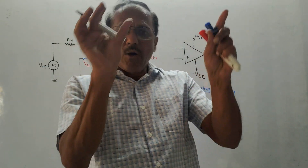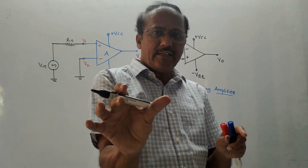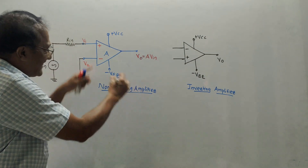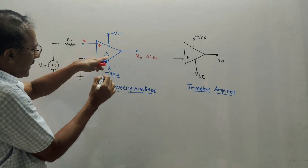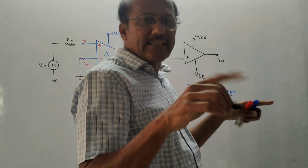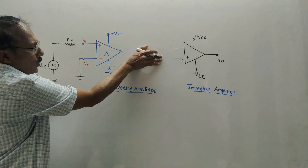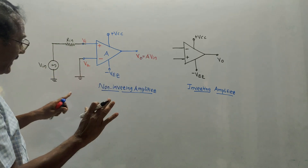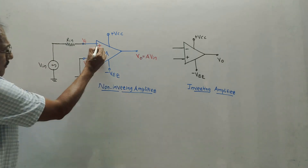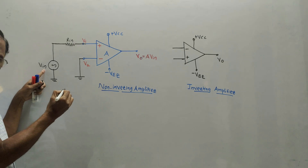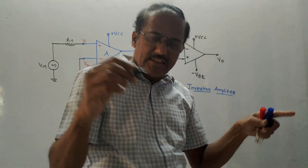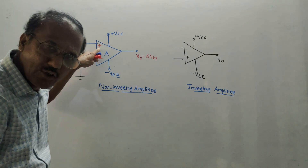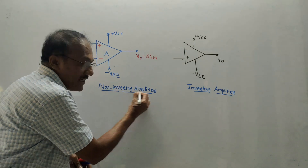There are two terminals in case of Op-Amp: positive terminal, called non-inverting, and negative terminal, called inverting. Since the name is non-inverting amplifier, I will connect the input supply VIN to the positive terminal through some resistance RIN. The remaining terminal, which is the negative terminal, I will connect to the ground. Use V1 to denote the voltage at the positive terminal and V2 to denote the voltage at the negative terminal.